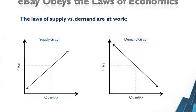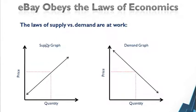Understanding the market opportunity for a given product is extremely important for an eBay business. Every single product on the eBay platform operates on a market economy, or in other words, under the laws of economics. Looking at the supply graph, you can see on the x-axis there's quantity and on the y-axis there's price. You can see that as the merchant is able to get a higher price, he's willing to put more and more quantity out in the market, so the supply graph is on a positive incline.